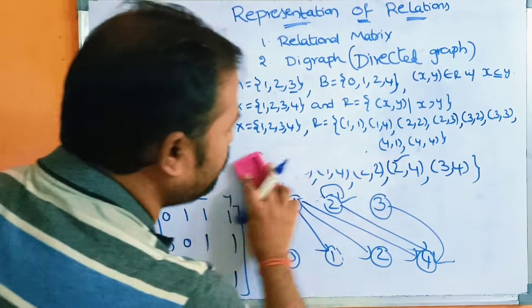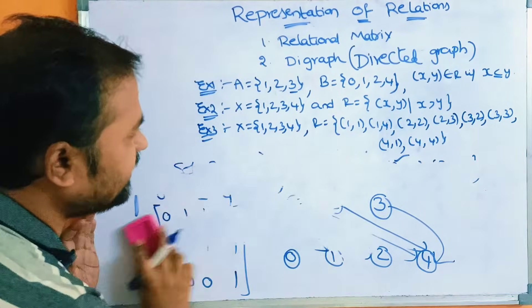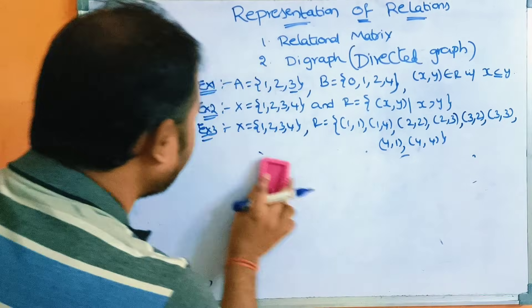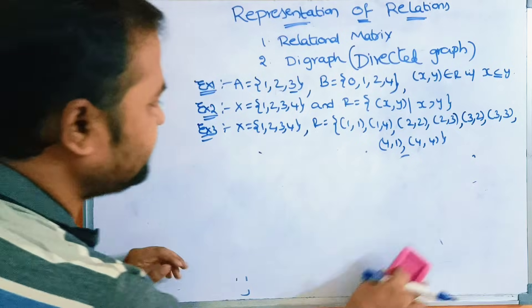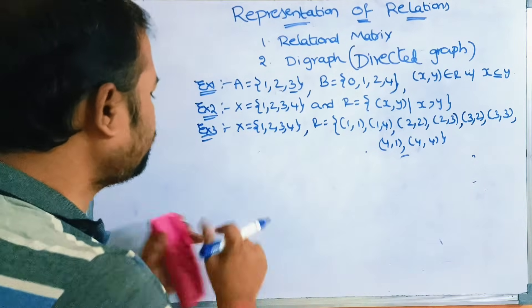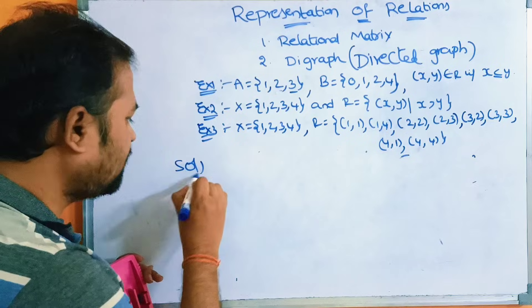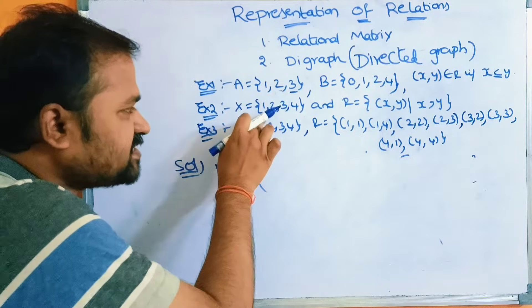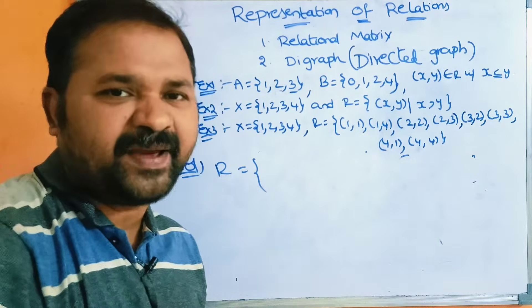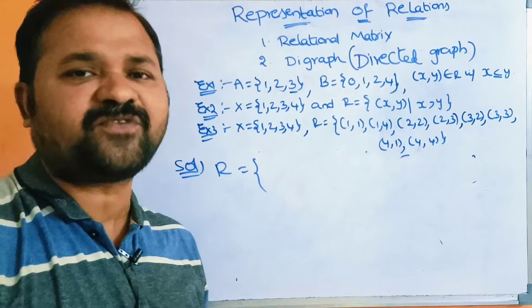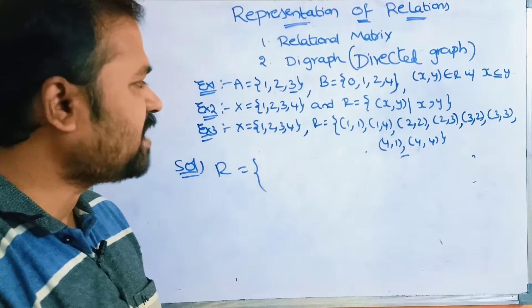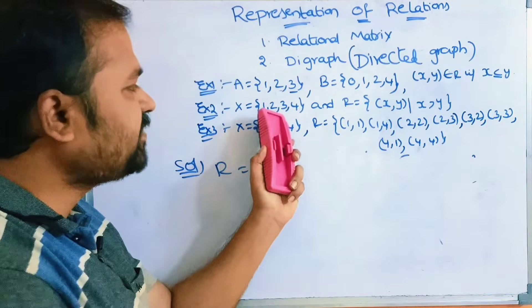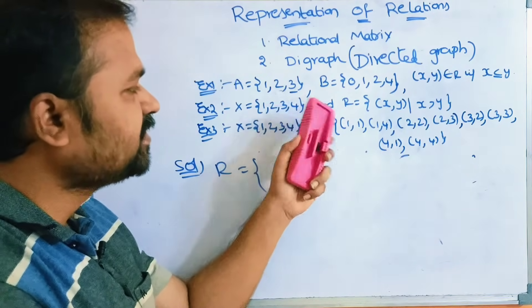Now let us solve the second example. The relation is defined on set X = {1, 2, 3, 4} where XY belongs to R if X is greater than Y. Taking element 1 first: we cannot write (1,1) since 1 > 1 is false; we cannot write (1,2), (1,3), or (1,4) since 1 is not greater than any of these values.